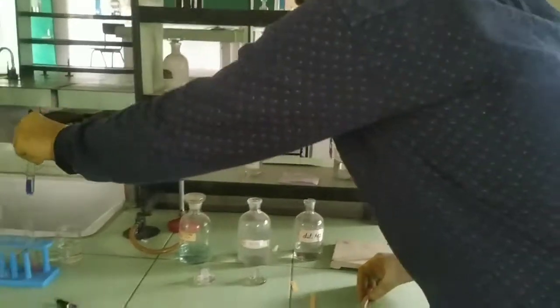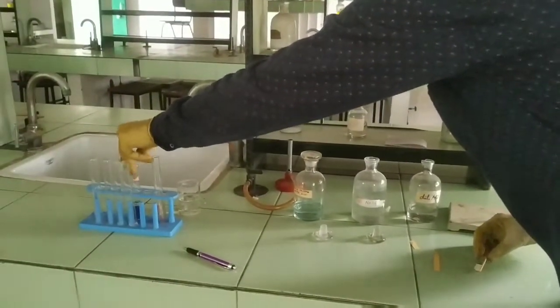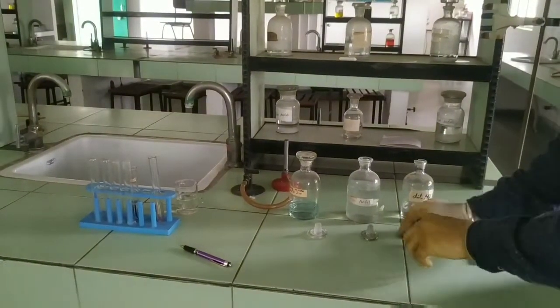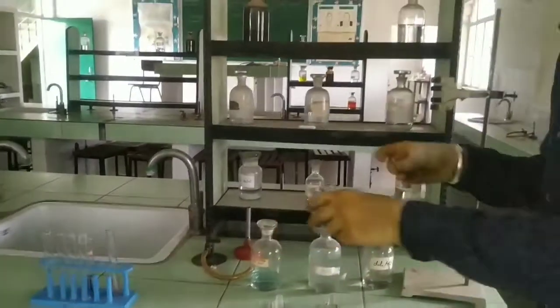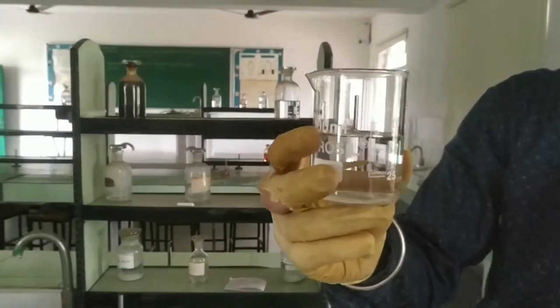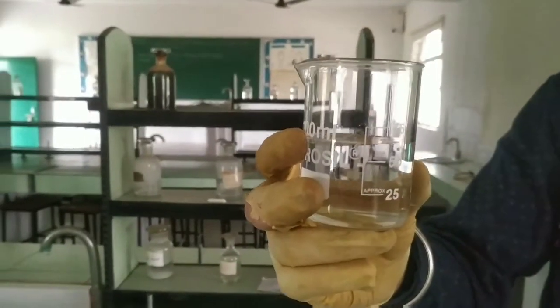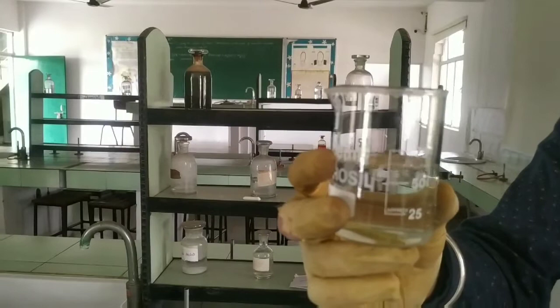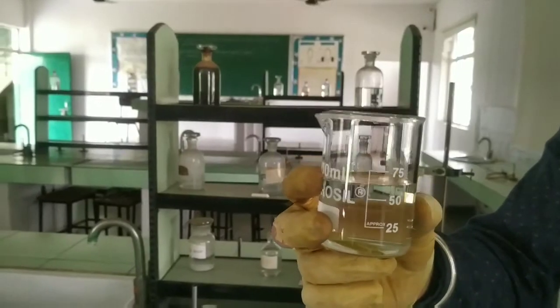Now we are going to do our experiment with water. So when we put litmus paper in the water, its color will remain the same. This proves the pH of water is neutral, meaning this is neither acidic nor basic.